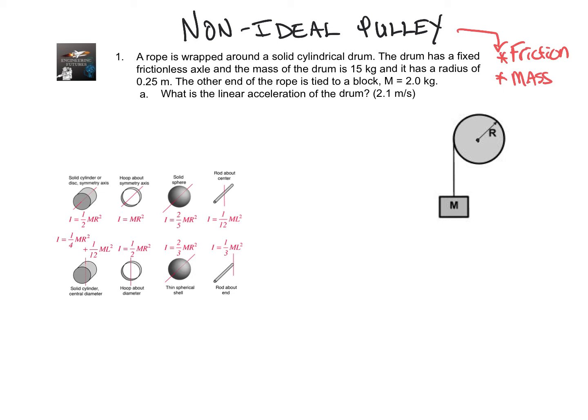Here we have a rope that's wrapped around a solid cylindrical drum. A pulley is a solid cylinder with a fixed frictionless axis and the mass of the drum is 15 kilograms, it has a radius of 0.25 meters. The other end is tied to a block that has a mass of 2 kilograms.